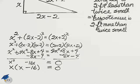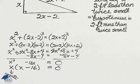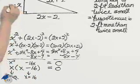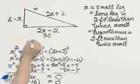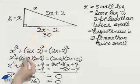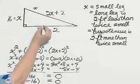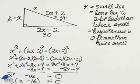Now let's think. Sure, x could equal zero, but that would just be a point — not a real triangle. So x equals 16. Then 2(16) minus 2 is 30 for the long leg, and 2(16) plus 2 is 34. See that star? That's the only answer they wanted — the hypotenuse: 34 feet.